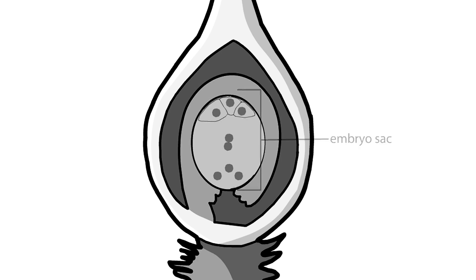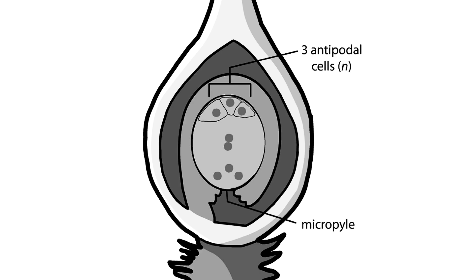Within the embryo sac, cell walls form between most of the nuclei. Three cells, antipodal cells, form opposite the micropyle opening of the ovule. Three also form near the micropyle. Two are called synergids and the other is the egg.